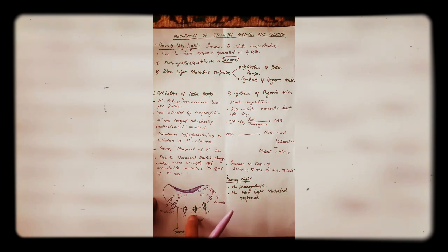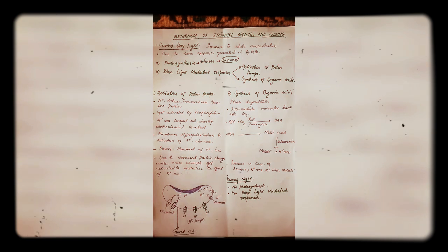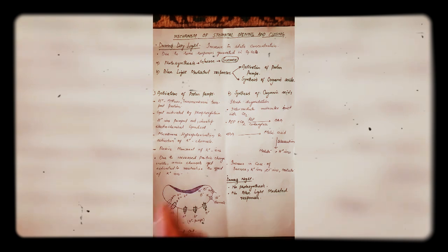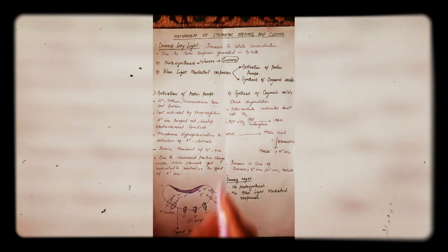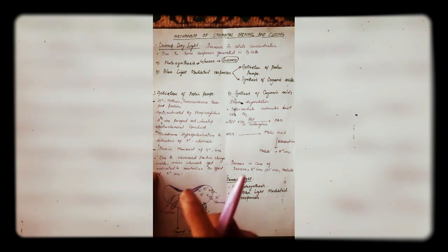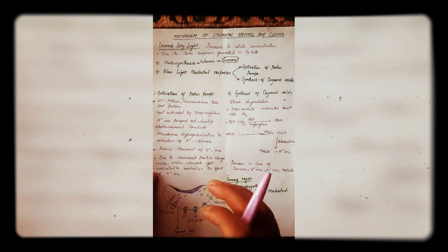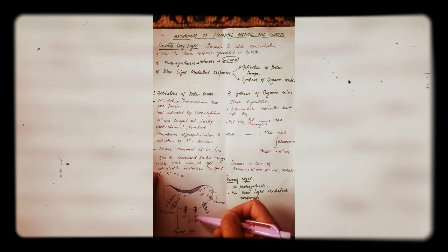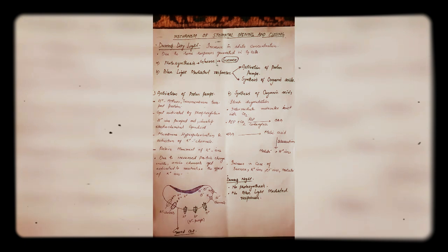This is the plasma membrane — we have pumps present on it. These are proton pumps. These pumps are H⁺-ATPases, so they are using ATP; they are utilizing ATP. They break down ATP and by phosphorylation they get activated with the blue wavelength of light. These proton pumps are transmembrane proteins — they span the membrane and have two different sides: one inside the guard cell and another outside the guard cell. By these pumps, protons are pumped across the membrane — they are pumped out — and by pumping out outside this plasma membrane they generate an electrochemical gradient.